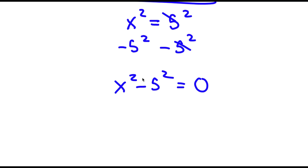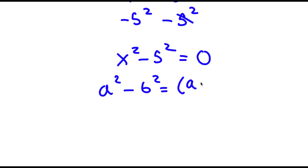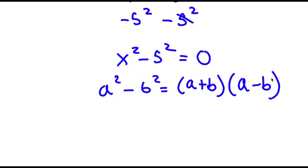Now, to solve something like this, I'm going to be using the core rule of algebra that states that if I have something in the form a squared minus b squared, this is equal to a plus b times a minus b. So in this case, a is going to equal x and b is going to equal 5.